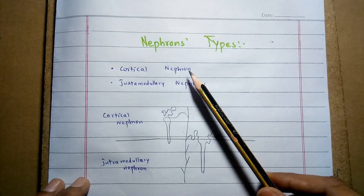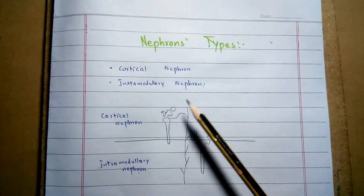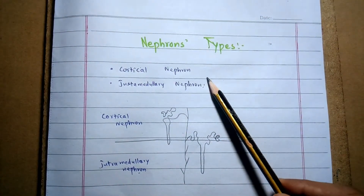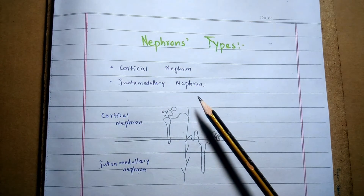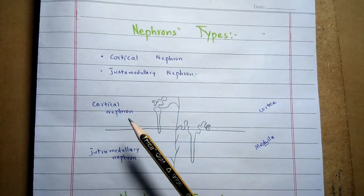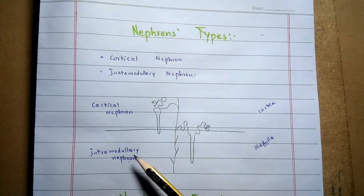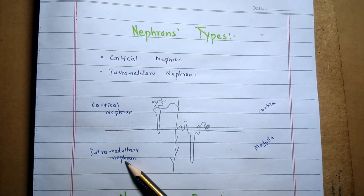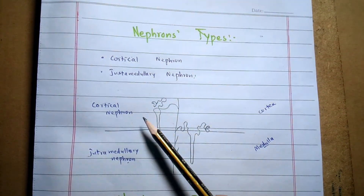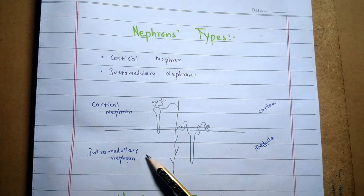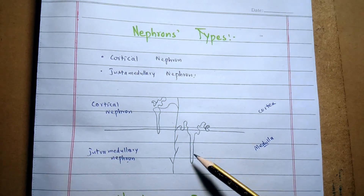There are two types of nephron present in the kidney: the cortical nephron and the juxtamedullary nephron. This classification is based on how deep the nephron lies within the kidney mass. Cortical nephrons have a short loop of Henle and are present mostly in the cortex of the kidney, with a short distance into the medulla. The juxtamedullary nephron has a longer loop of Henle and lies deep in the medullary portion.